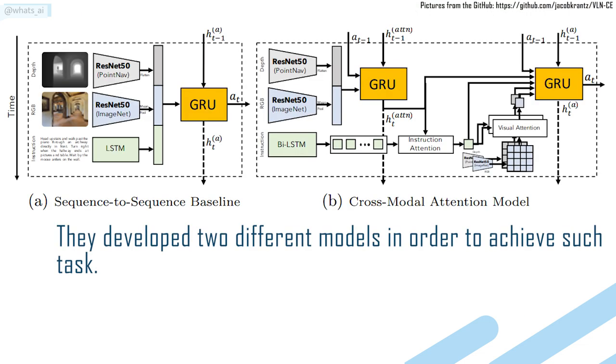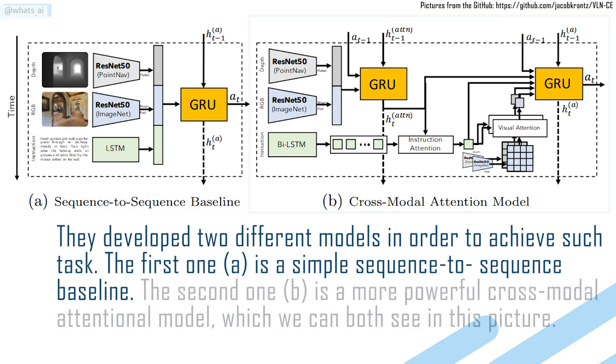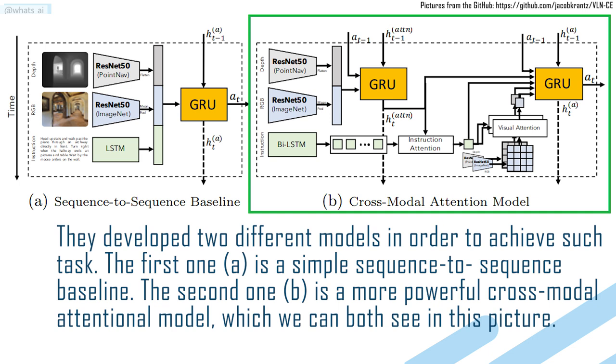They developed two different models in order to achieve such tasks. The first one, A, is a simple sequence-to-sequence baseline. The second one, B, is a more powerful cross-modal attention model which we can both see in this picture.